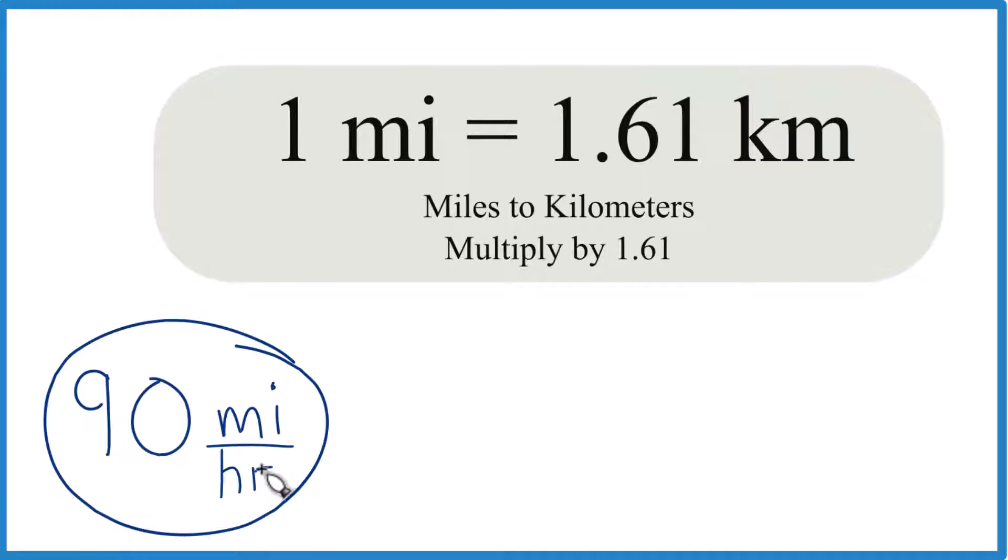Let's convert 90 miles per hour, that's 90 mph, to kilometers per hour. First off, one mile equals 1.61 kilometers, so they're equal.